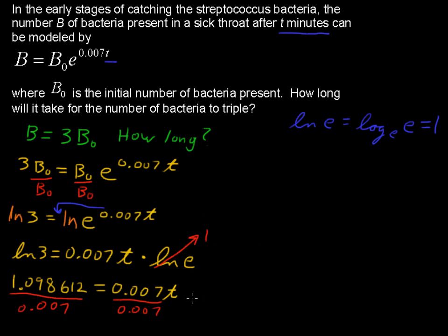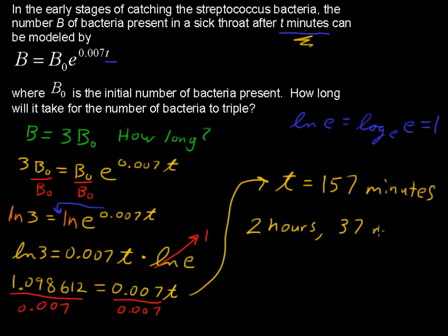And I am going to write this as T first. T equals, the number is 157. We know that it's in minutes. And 157, but that's just in minutes. So actually, it'll only take about 2 hours and 37 minutes for the number of bacteria to triple.